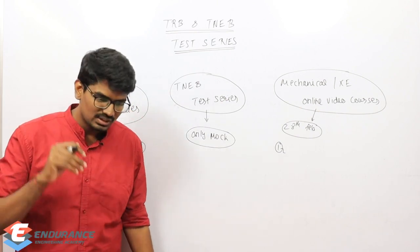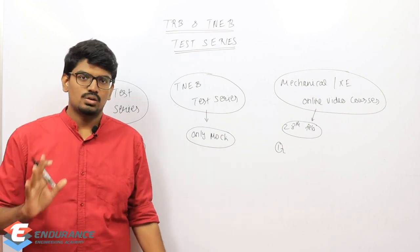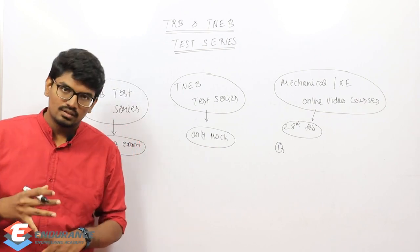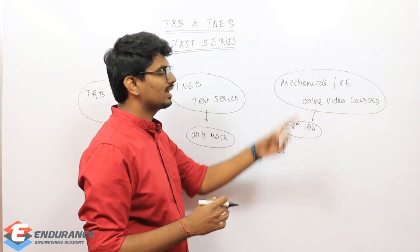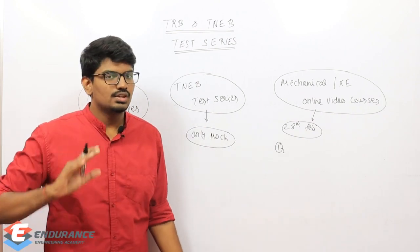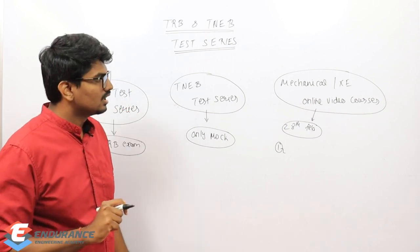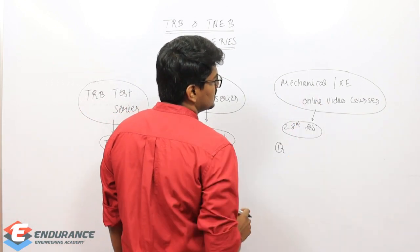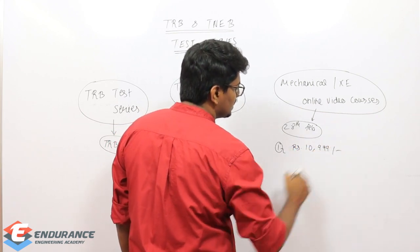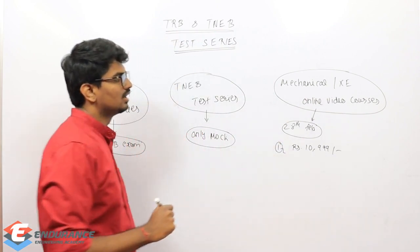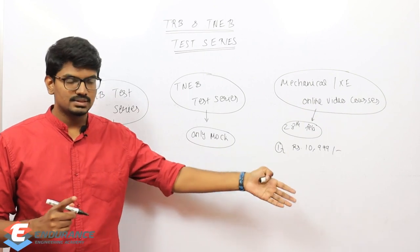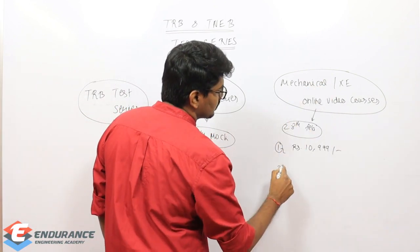You can see the demos of all our videos - I'll attach the link in the description. What does the mechanical course include? If you register for mechanical only, the price will be rupees 10,999 until 28th February. After 28th, the price will be revised and will increase. Only XC is seven triple nine (7,999).